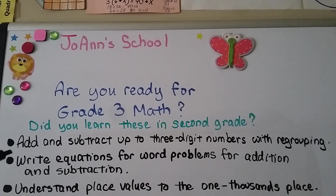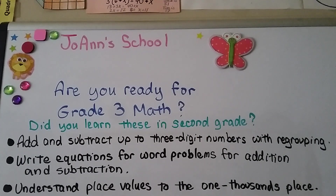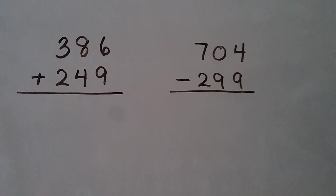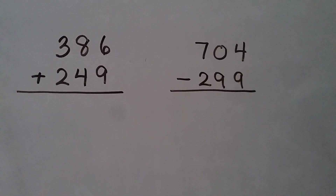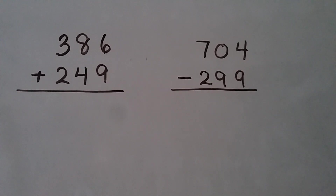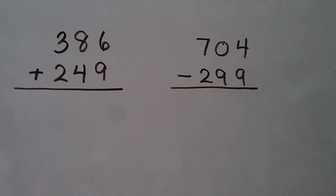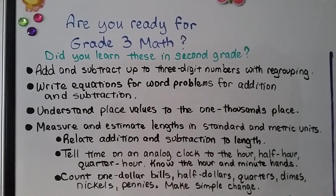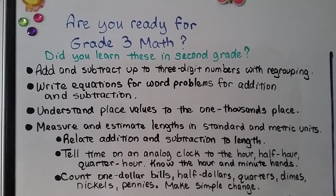Did you learn to add and subtract up to three-digit numbers with regrouping? That means you can do addition or subtraction problems like these. Do you know how to write equations for word problems for addition and subtraction? Do you understand place values to the one-thousands place?